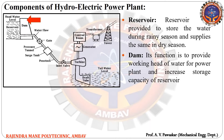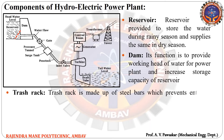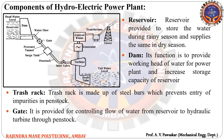The next component is the trash rack — it is made up of steel bars which prevent the entry of impurities into the penstock. The next component is the gate — it is provided for controlling the flow of water from the reservoir to the hydraulic turbine through the penstock.